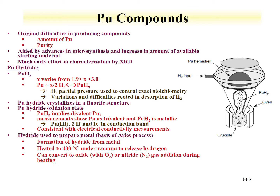Some properties of the plutonium hydrides are exploited in processing. Here's an example of the ARIES process, where a plutonium metal is treated with hydrogen to form plutonium hydride. The hydride flakes away from the metal into a crucible. The plutonium hydride in the crucible is then heated to 400 degrees under vacuum, the hydrogen is released, and the metal is reformed. This converts a shape that may have classification issues into a metal with an unclassified shape, and can also have criticality safety controls associated with it.